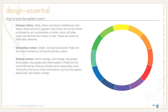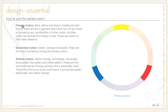The terms we use most often with the color wheel are the ways we group colors into specific types. The first grouping is the primary colors: red, yellow, and blue. In traditional color theory, these are the three pigment colors that cannot be mixed or formed by any combination of other colors. All other colors are derived from these three hues.